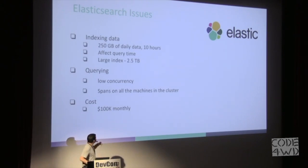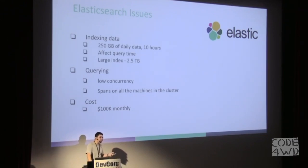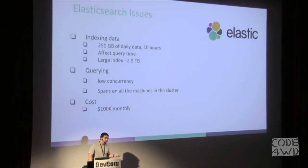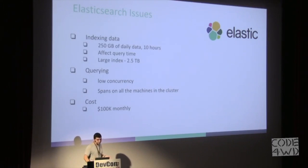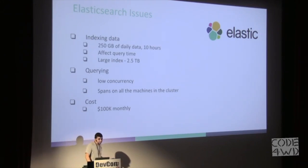To solve these two issues, we set up multiple Elasticsearch clusters — one for indexing and one for querying — and during the day we would swap between them. But this resulted in a very high monthly bill, and eventually we reached 100,000 dollars every month, which was too high for us.